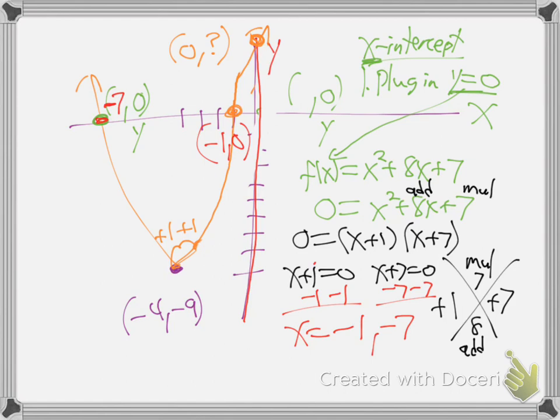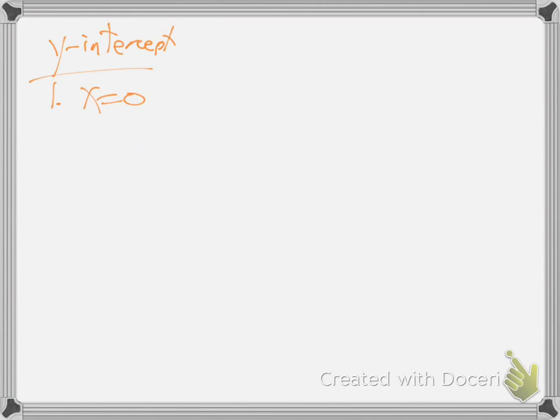If you're on a grid line, one of your numbers is zero - that's what it means to be on a grid line. When we find intercept points, you've got to plug in zero. We always plug in the opposite letter zero. To find x-intercepts, make y zero and solve. To find y-intercepts, make x zero and solve.